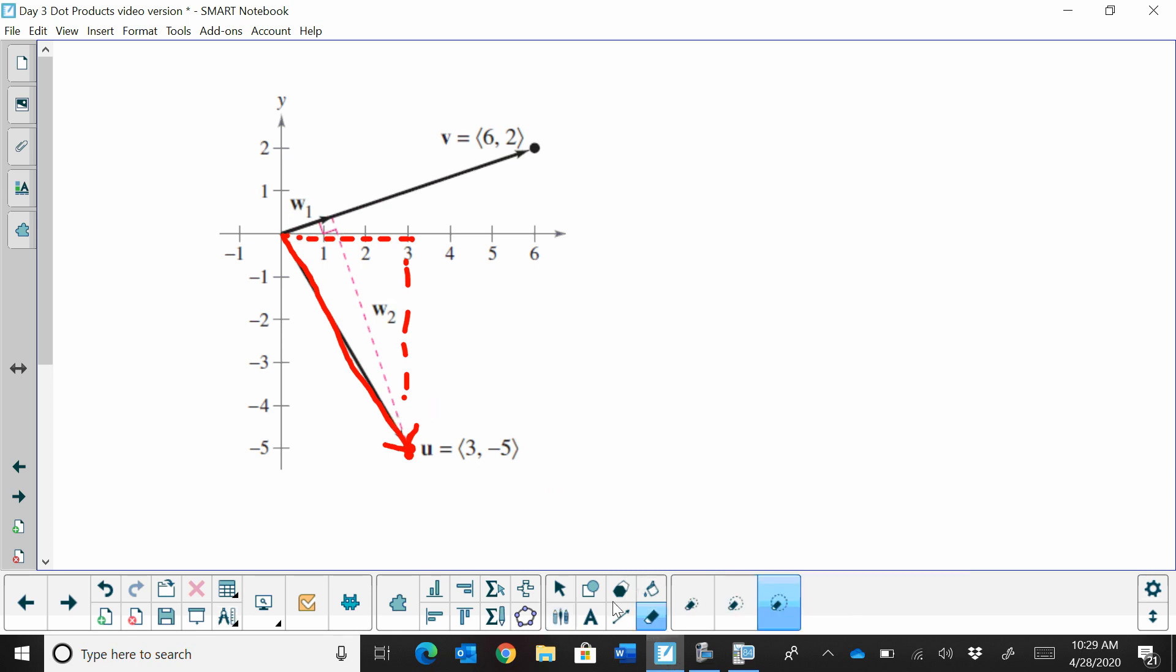Now, the best way to explain this is, let's say that we cannot use the x-axis. Let's say it's snowed, and this road along the x-axis is covered, and you can't get there. So you're going to take a different road called v. Instead of going out 3 and down 5, you now have to go up this road, and then make a perpendicular turn to get to the same final position u.